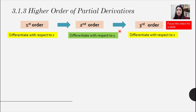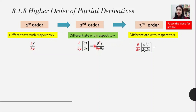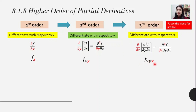The third order is fyyx. For the next case: first order with respect to x is ∂f/∂x. For the second order with respect to y, take the first-order answer, apply ∂/∂y, and rewrite as ∂²f/∂y∂x. For the third order with respect to x, apply ∂/∂x to get ∂³f/∂x∂y∂x. Do not group ∂x·∂x into ∂x² — you must follow the sequence of differentiation. Subscript notation: fx, fxy, fxyx. Pause and try this yourself.